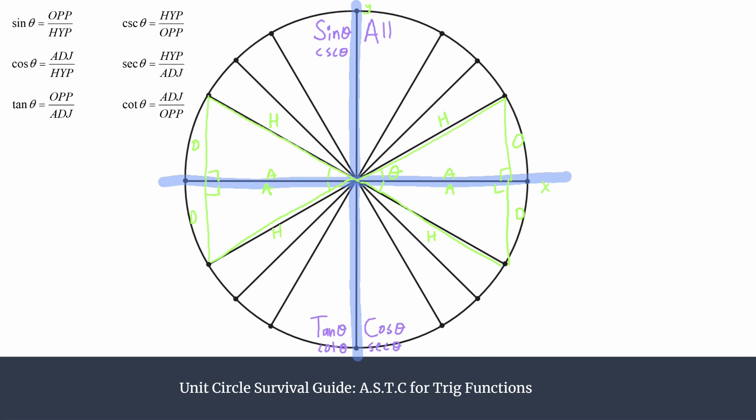When finding exact values, it's very helpful to know which trig functions are going to be positive in which particular quadrants. We can determine this simply from our knowledge of the coordinates in each quadrant — whether they are positive or negative. For our point (x, y) in quadrant one, both x and y are positive. So no matter how you calculate — opposite over hypotenuse, adjacent over hypotenuse, opposite over adjacent, or any reciprocal — you will have a positive value when you evaluate.